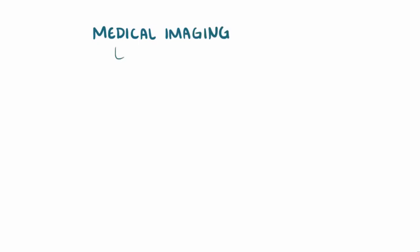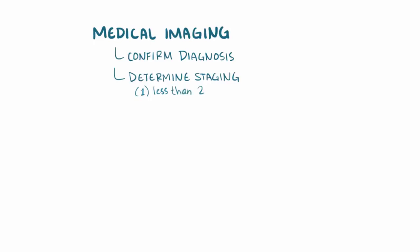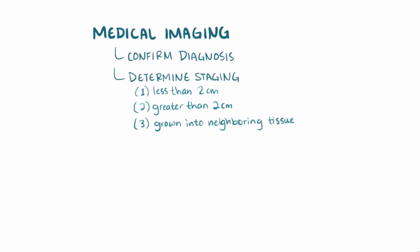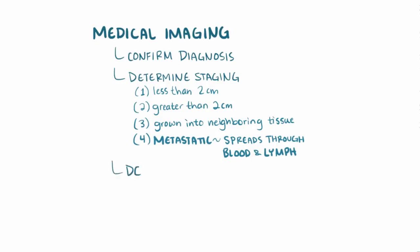Medical imaging techniques are used to confirm a diagnosis and help with staging. Stage 1 is tumors less than 2 cm; stage 2 is tumors greater than 2 cm; stage 3 is spread to neighboring tissues and organs like the duodenum and stomach; and stage 4 is metastatic, meaning it can spread through the blood and lymph to other tissues like the liver and lungs. Imaging can also be used to help determine if the tumor is resectable.